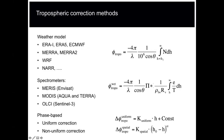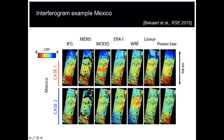Lastly, we have phase-based methods, where we estimate the correction directly from the data. We apply either a linear correlation with topography or a power-law relationship. All of these methods have their own limitations. On the left-hand side you can see the original interferogram, and then the MERIS spectrometer correction — it looks very much like the original, but there are some patches with no data. That's the limitation: spectrometers only work in daylight and are sensitive to clouds, so when you have significant atmospheric delays, measurements may not be available.